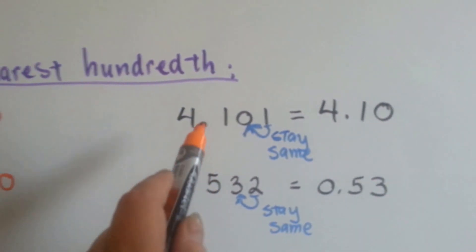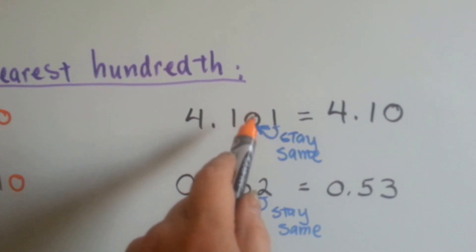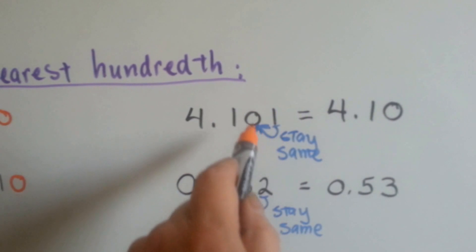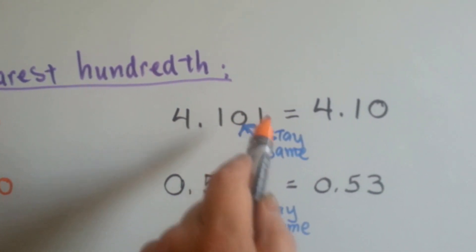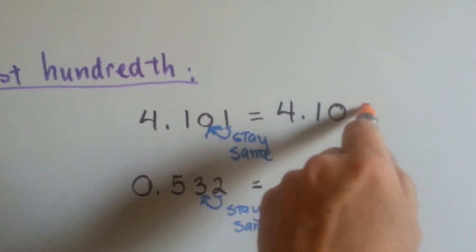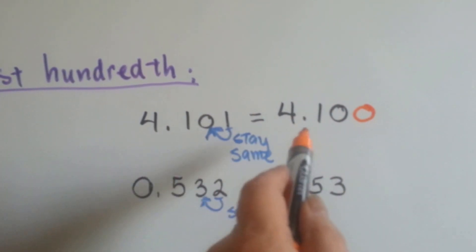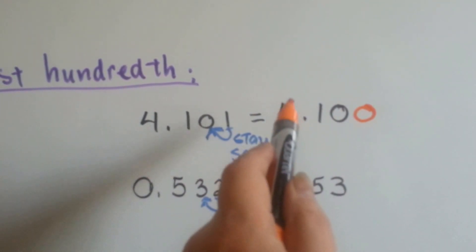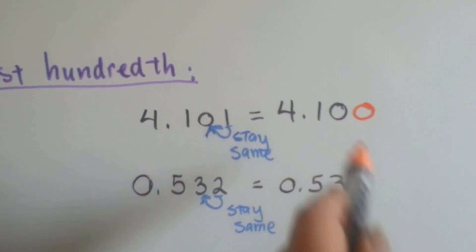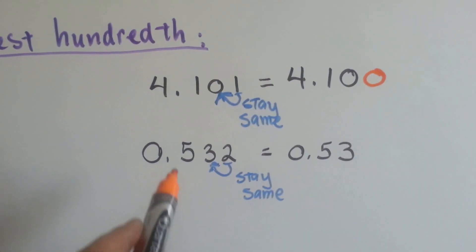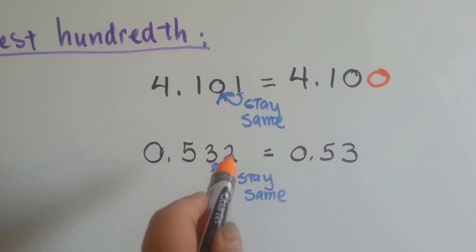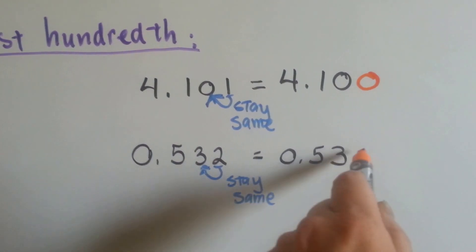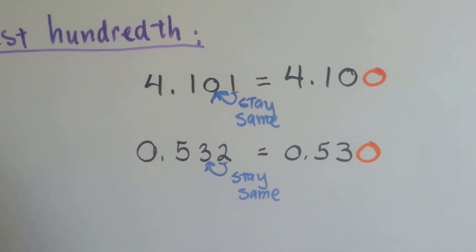For this one, if we're rounding to the hundredths place — that's this place — the one tells the zero to stay the same, and when it's finished with its job it turns into a zero. We could have put that zero in, but we didn't have to. It becomes four and ten hundredths. For this one, the two tells the three, which is in the hundredths place, to stay the same, and then it drops off or becomes a zero. We could have put a zero for that two there if we wanted to.